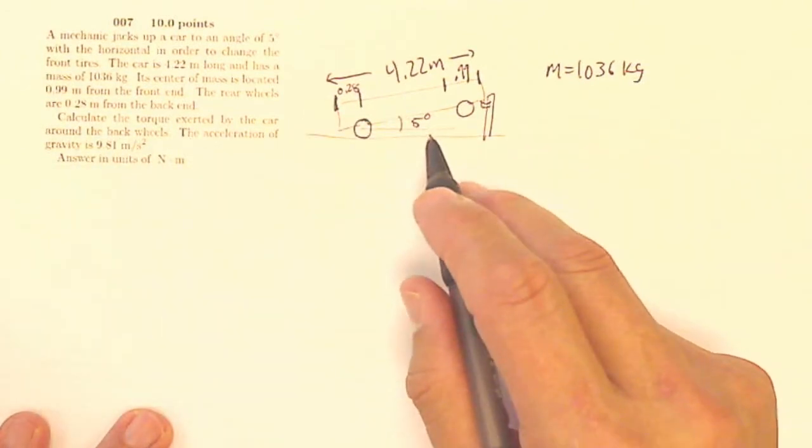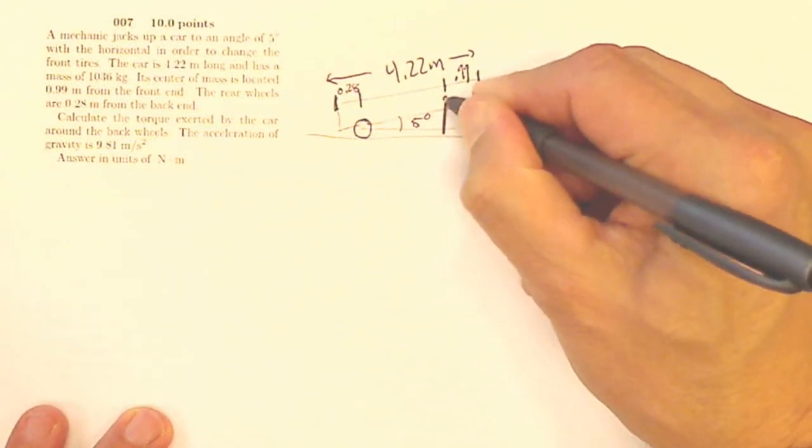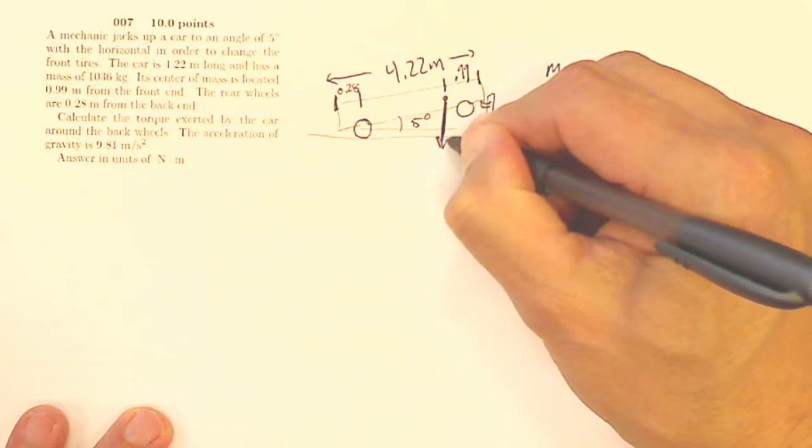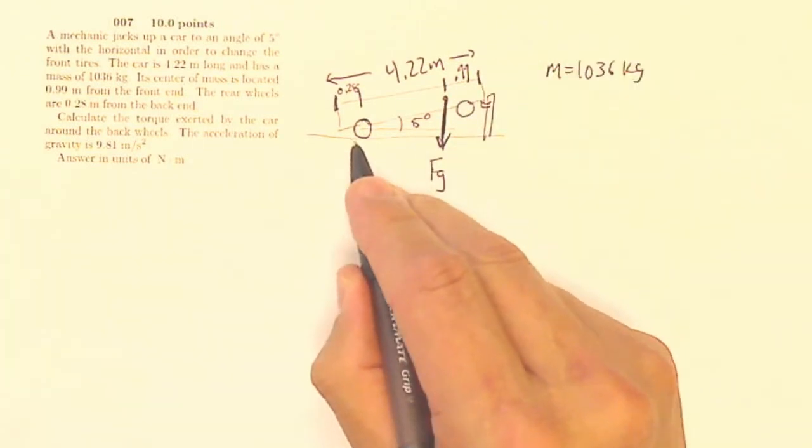So I want the torque exerted by the car around the back wheels. That's going to be, if I've got my force of gravity, that's what I'm interested in here. What is the torque from this force of gravity around the back wheels?